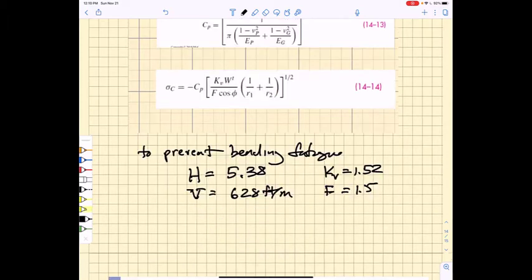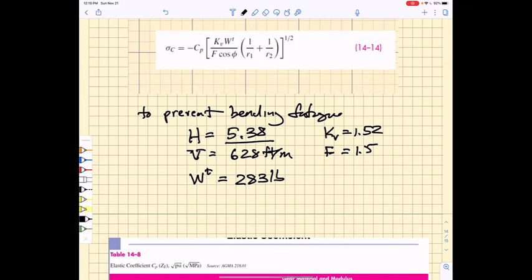And if we use 5.38 horsepower, then we have a tangential force that would be equal to 283 pounds. The other thing that we know is that the tooth force, which acts along the pressure line, would be this tangential force divided by the cosine of the pressure angle, and that gives us a load of approximately 300 pounds.